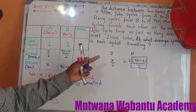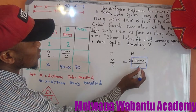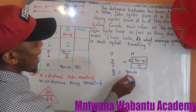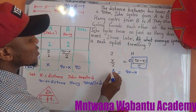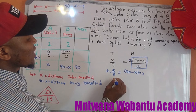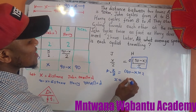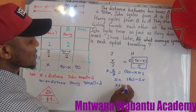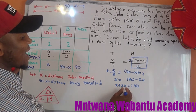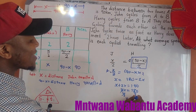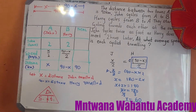The 2s cancel on both sides, giving us 90 minus x equals x over 2... actually multiplying both sides by 2 throughout, we get x equals 2 times 90 minus 2x, which is 180 minus 2x. Bringing 2x to the left gives 3x equals 180. Dividing by 3, x equals 60.